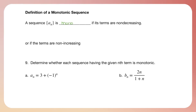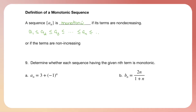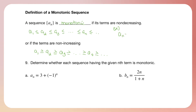Now let's learn what a monotonic sequence is. A monotonic sequence is one where the terms are non-decreasing — staying the same or increasing. So for example, a sub one is less than or equal to a sub two, which is less than or equal to a sub three, which is less than or equal to a sub n, which is less than or equal to all following terms. We can also have a monotonic sequence that's non-increasing — meaning it stays the same or decreases from each term. So a sub one is greater than or equal to a sub two, which is greater than or equal to a sub three, and so on.